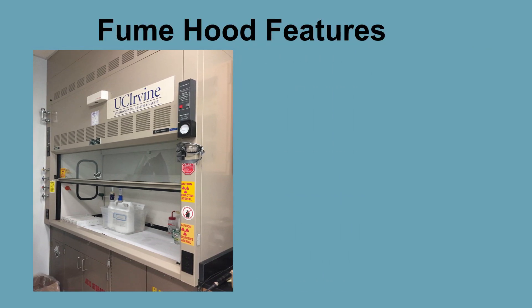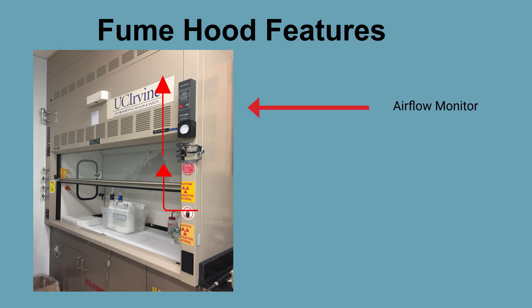The exhaust duct, which is not visible in the picture, is the pathway through which air leaves the fume hood and discharges into the atmosphere. There is an exhaust fan at the terminal end of the duct to help expel the exhaust air at the appropriate level. The airflow monitor and alarm system is located in front of the fume hood. The airflow monitor provides the user with information related to the airflow through the system and the associated face velocity. The monitor will alarm and alert the user if there is an airflow malfunction.